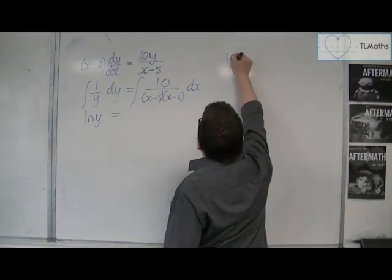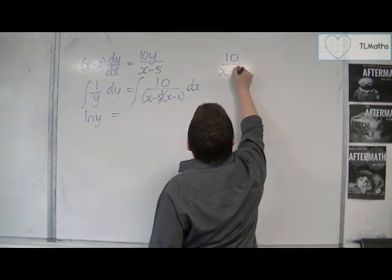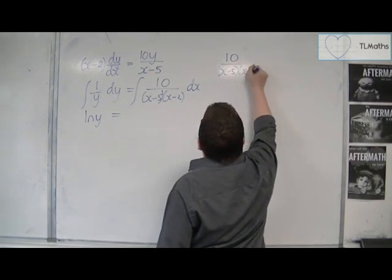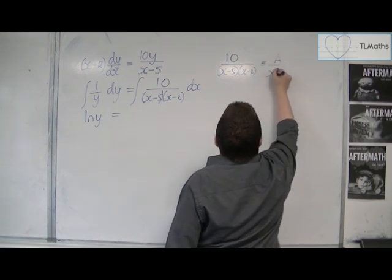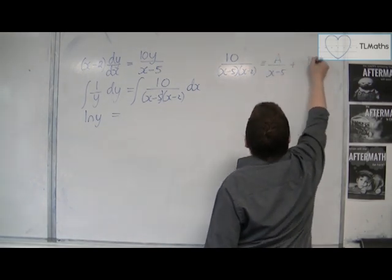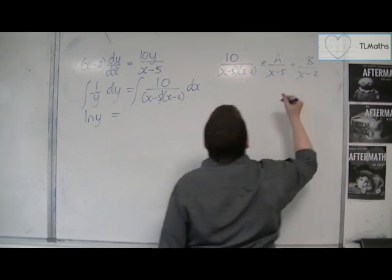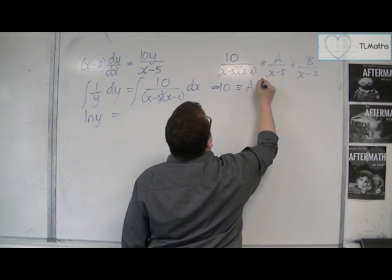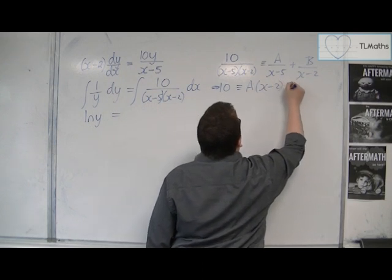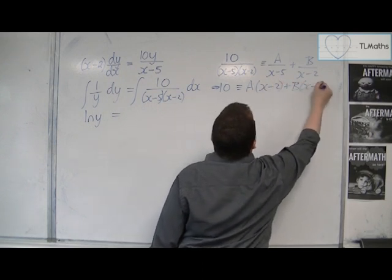So, 10 over x minus 5 x minus 2 is equivalent to a over x minus 5 plus b over x minus 2. So that means that 10 is the same as a lots of x minus 2 plus b lots of x minus 5.